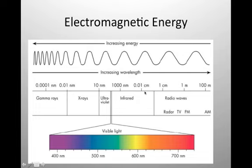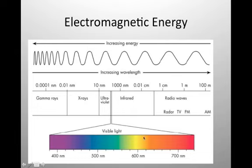UV is a type of energy emitted by the sun — very high energy radiation that has the ability to do damage to certain cells. The wavelengths that are most important to us, especially for photosynthesis, are the visible light spectrum, and we'll talk more about how the visible light spectrum is important.